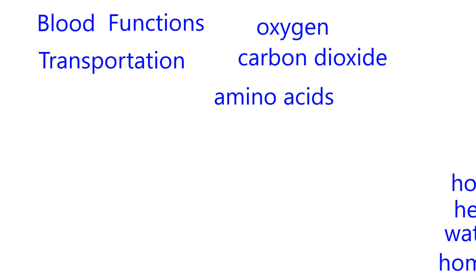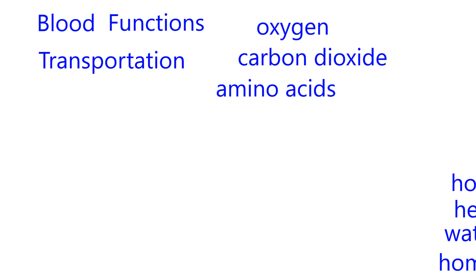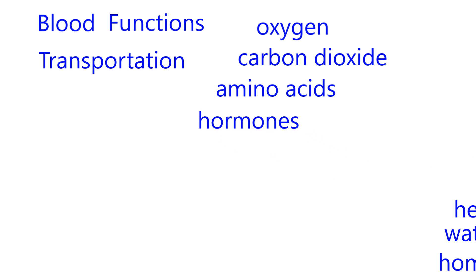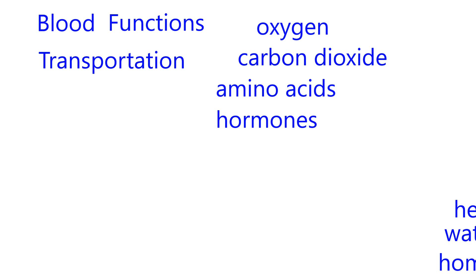Transportation also involves amino acids. Amino acids are absorbed by the intestine, and some of them can be made by the liver. They're transported to all tissues and used for making muscle and also making hormones. But other hormones are not made of amino acids — wherever hormones are made, they are put into the blood and usually transported to what's called a distant target tissue. We'll do that when we talk about endocrinology.